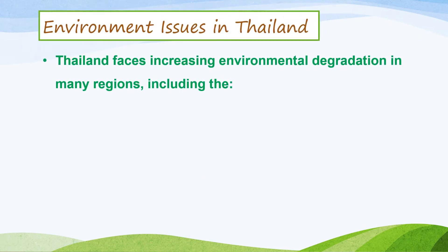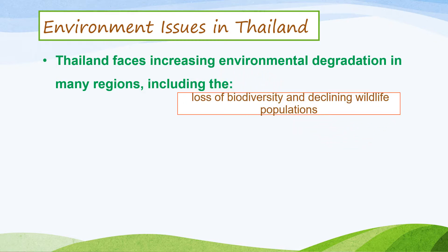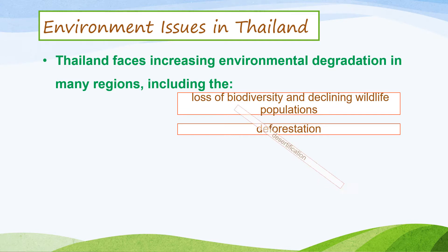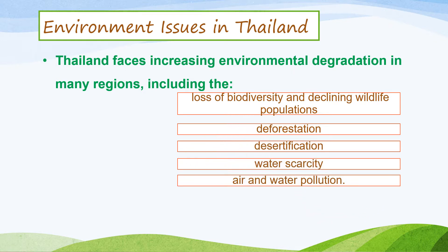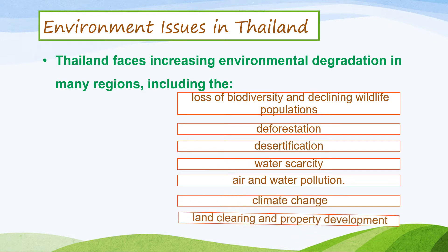In Thailand, we have environment issues. Thailand faces increasing environmental degradation in many regions, including the loss of biodiversity and declining wildlife populations. Next: deforestation, desertification, water scarcity, air and water pollution, climate change, and land clearing and property development.